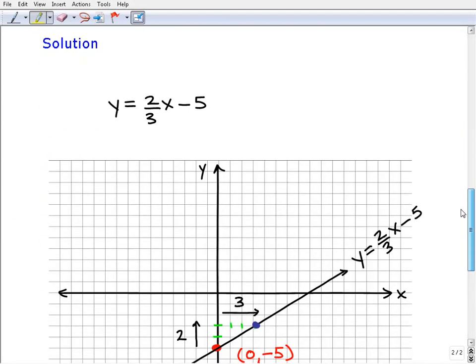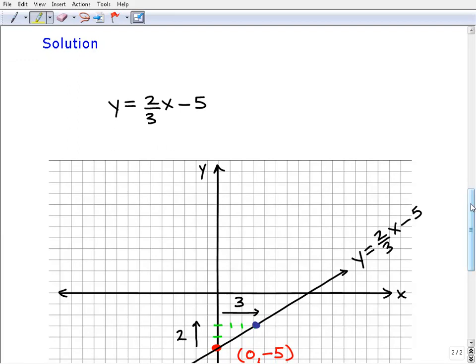Alright, so this is pretty straightforward. Obviously when you understand it, everything is straightforward, but basically when you're graphing a line using the slope-intercept formula, the first thing we want to do is find this point here. We go to this number, okay,